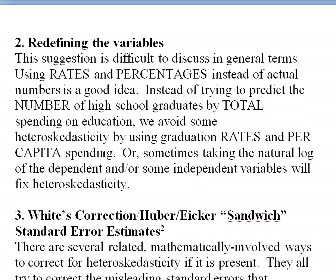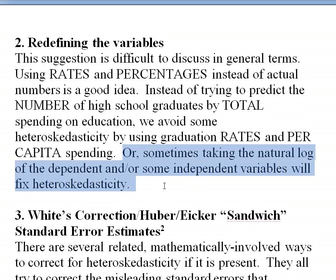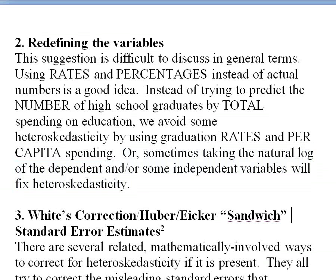Another approach is taking the natural log of the dependent variable or some of your explanatory variables. Sometimes heteroscedasticity means you have the wrong functional form, and by changing the functional form you can fix this problem.